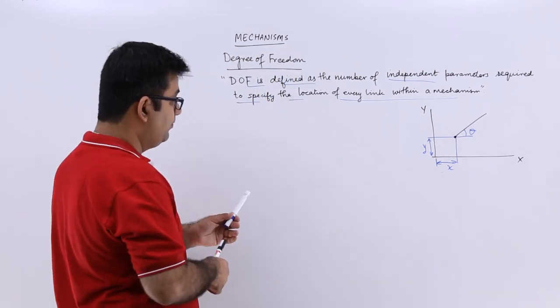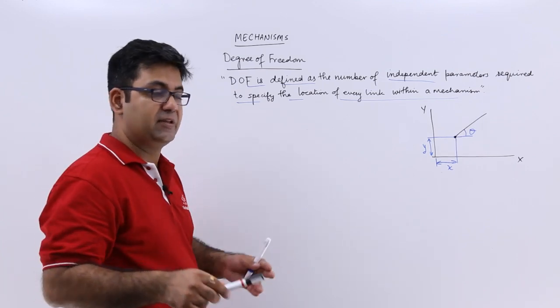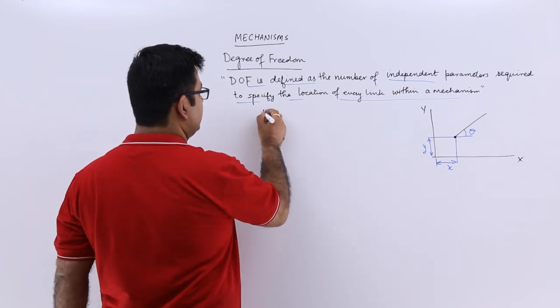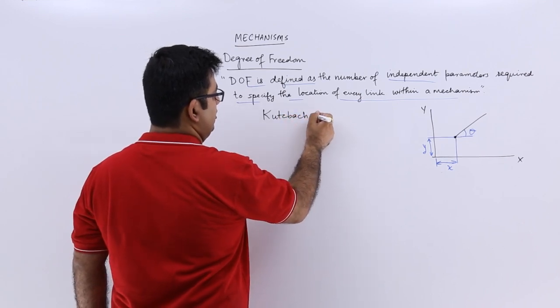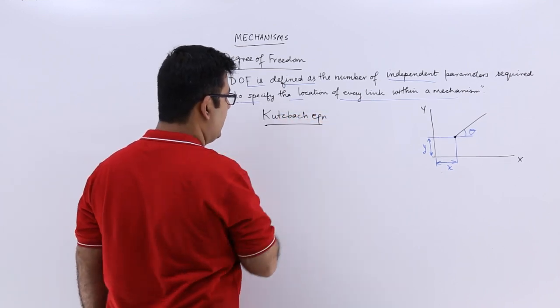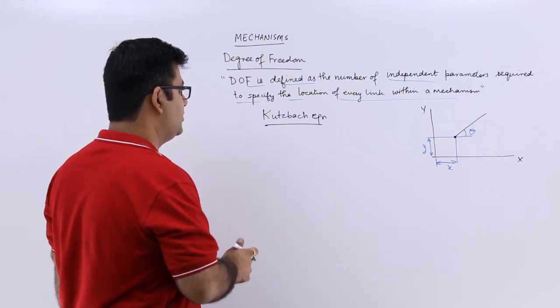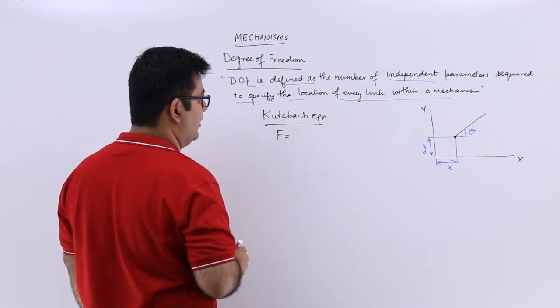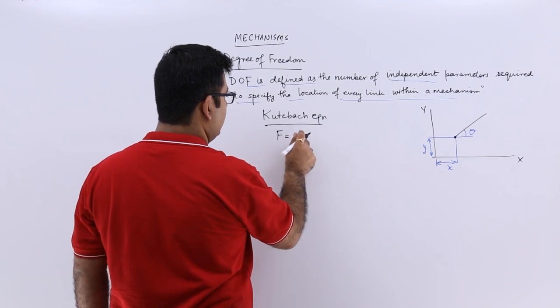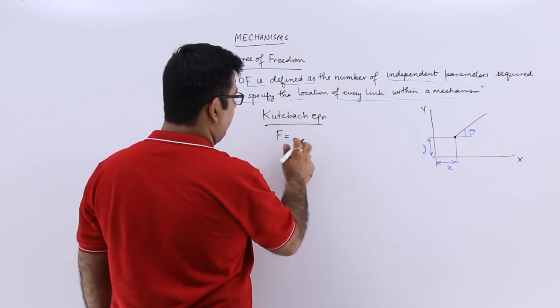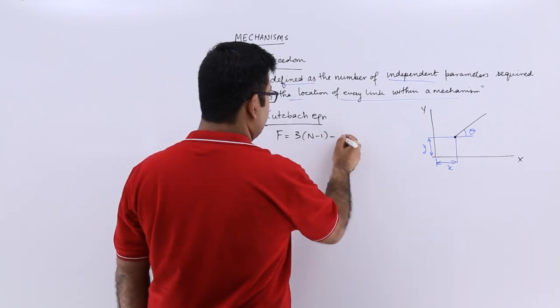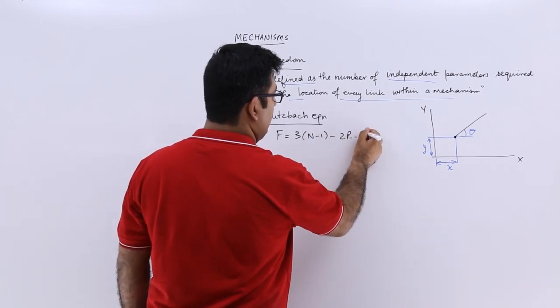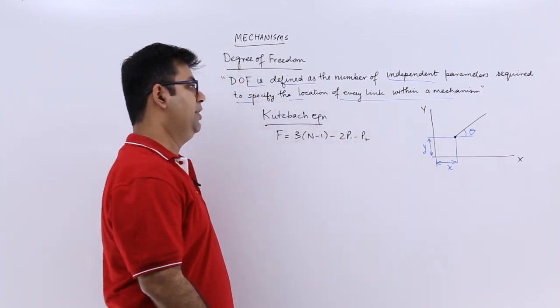Now there are two criterion mathematically. The first one is the Kutzbach equation. According to the Kutzbach equation, the degree of freedom F can be calculated as 3(N-1) - 2P1 - P2.